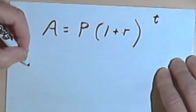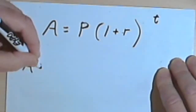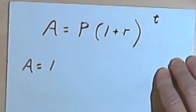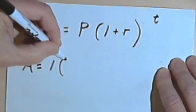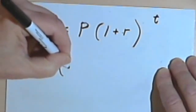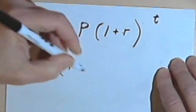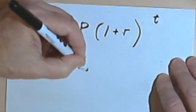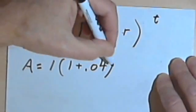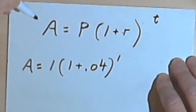So let's take an example. Let's say you want to find out how much money you're going to get back if you invest one dollar at 4%. So it'll be 1 times 1 plus 4% is 0.04. And you're just investing that for one year, so your exponent is 1.